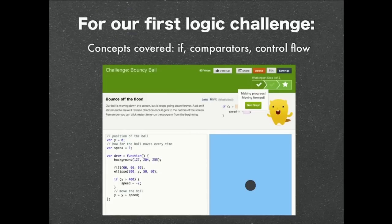But this was a kind of simple challenge — nothing very complex in terms of programming concepts. So we could get more complex and look at the first logic challenge, which is about 60% through the curriculum. This is a challenge where there's a bouncing ball and they need to set up an if statement so that the ball bounces off the bottom and goes back up — if y is greater than 400, then we decrease y.